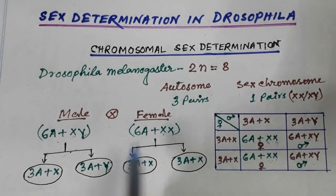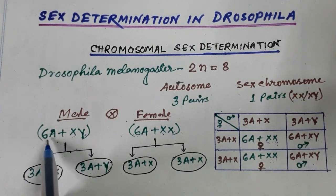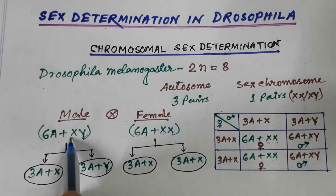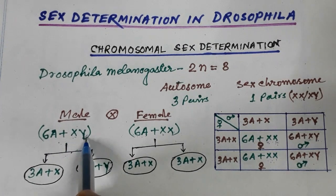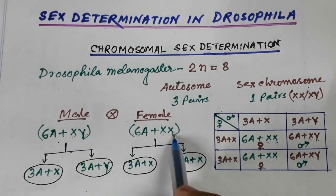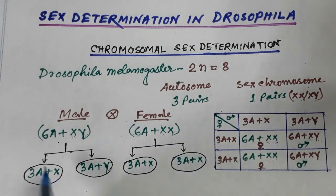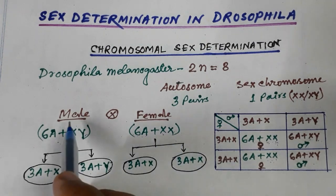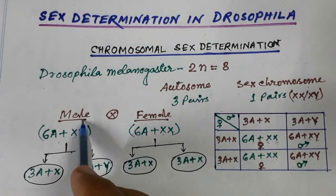In the male, there are six autosomes and two different sex chromosomes, X and Y. In the female, there are six autosomes and two X chromosomes present. During gamete formation, the male is heterogametic, producing two different types of gametes.